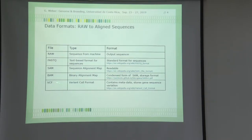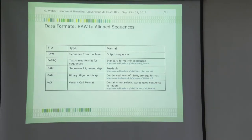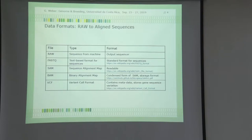Finally there is the VCF format — the Variant Call Format. This is used on the way to getting SNPs. If you have segregation in an F2, you have variants which are segregating, so you have the VCF format. This contains metadata including, if available, position information in the genome, positions on the map, and so forth. It stores gene sequence variations with as much information as possible.